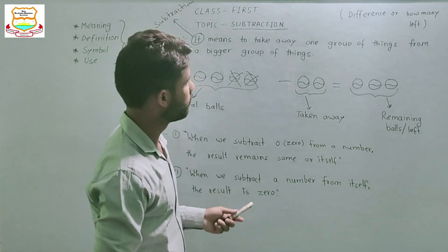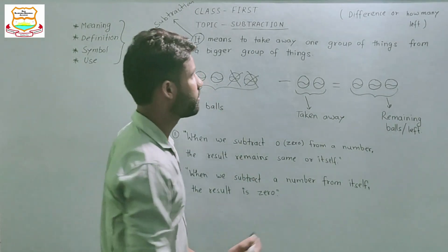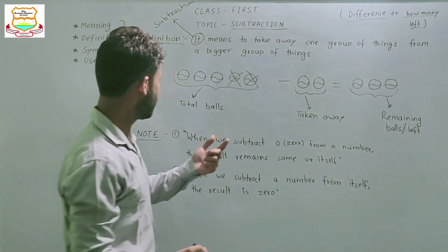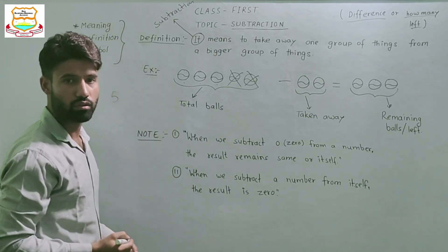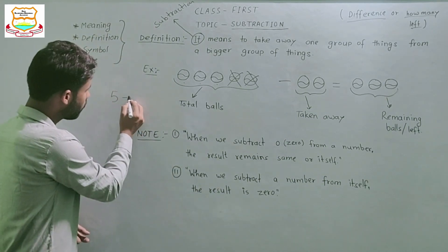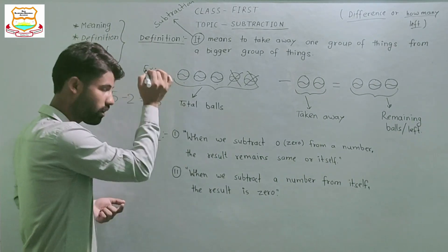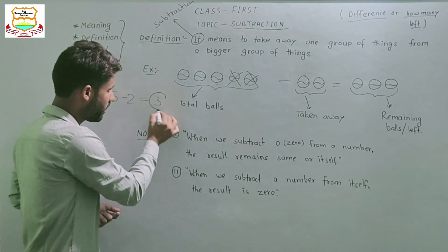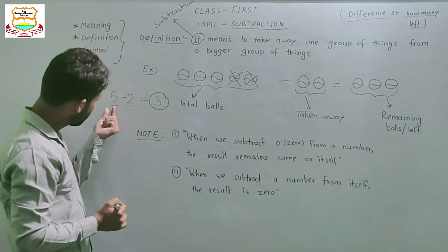Another point is: when we subtract something, we get a difference — how many are left. For example, I have five chocolates and two chocolates are missing. How many chocolates are remaining? Five minus two equals three, and this three is the difference between five and two.